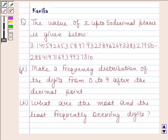In the first part, we have to make a frequency distribution of the digits from 0 to 9 after the decimal point.